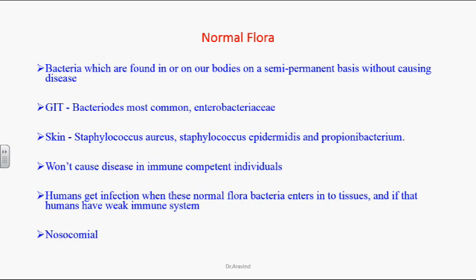We can have normal flora in the GI tract, on the skin, and on the urinary tract. Some important ones present in the GI tract are Bacteroides, which are normally seen in the GI tract and won't cause any infection unless there is a break in the skin and the bacteria are inoculated deep into the GI tract tissues. Otherwise, they are normally seen on the GI tract epithelium. Another organism normally seen in the GI tract is the Enterobacteriaceae group, which is always found inside the GI tract.